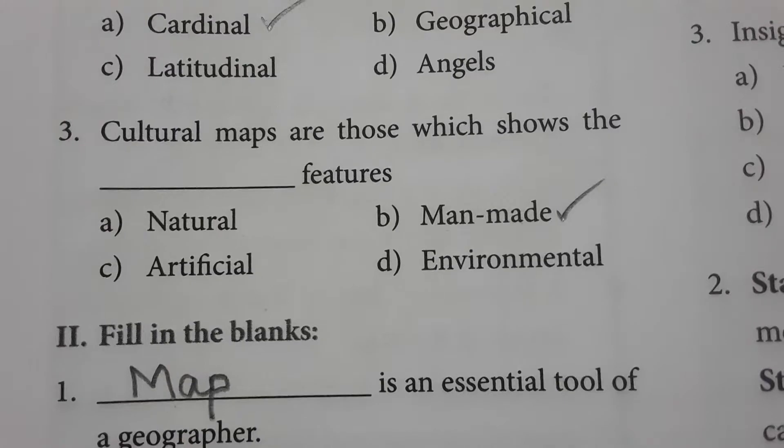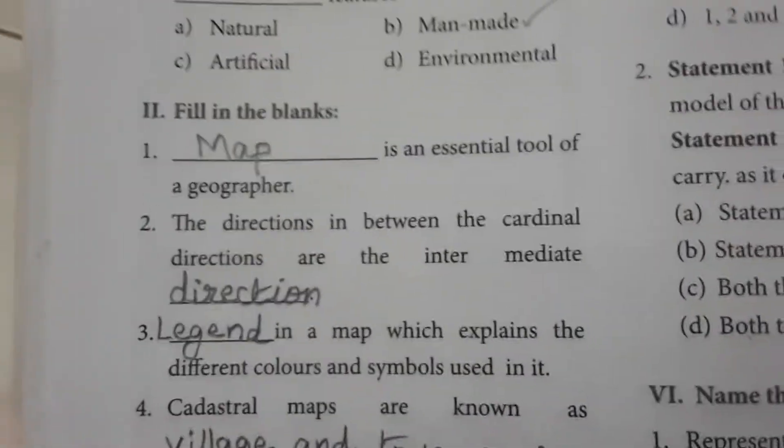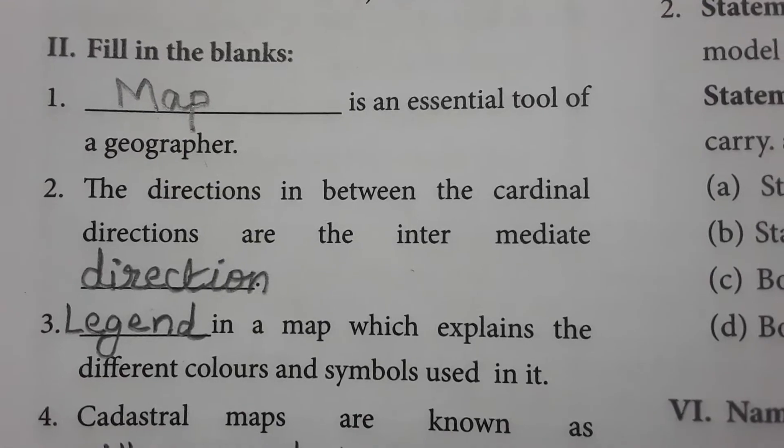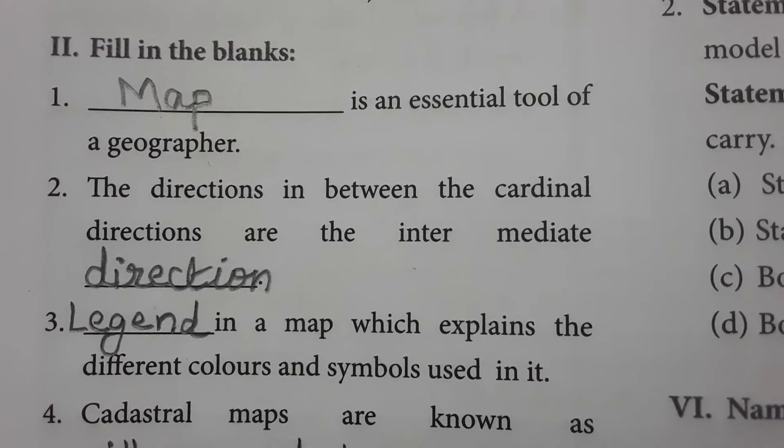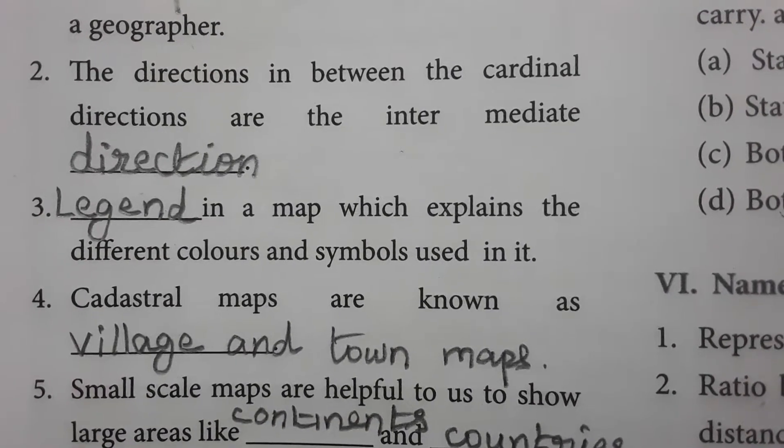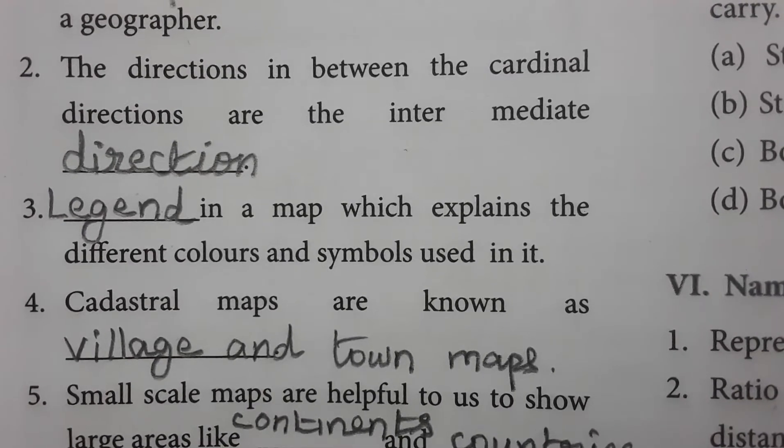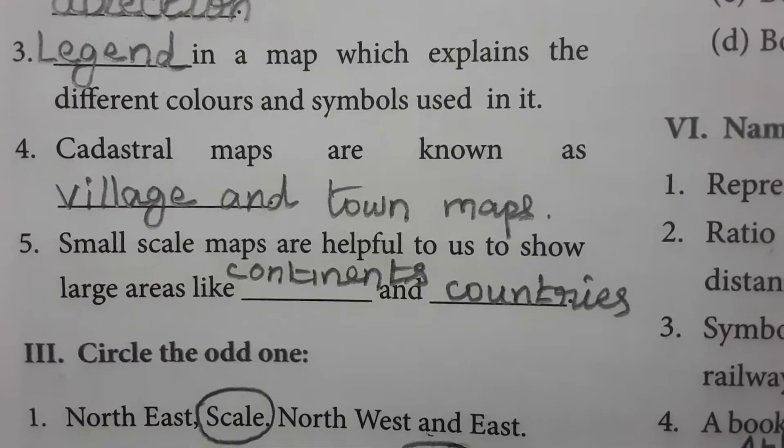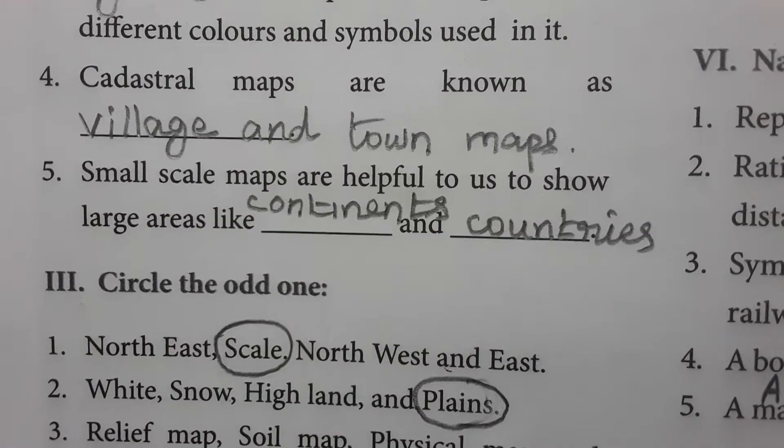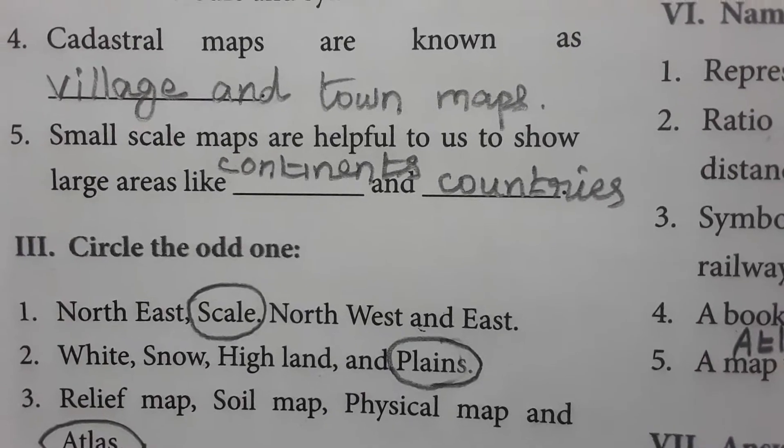Cultural maps are those which show man-made features. Fill in the blanks: Map is an essential tool of geographer. The directions in between the cardinal directions are the intermediate directions. Legend in a map explains the different colors and symbols used in it. Cadastral maps are known as village and town maps. Small scale maps are helpful to show large areas like continents and countries.